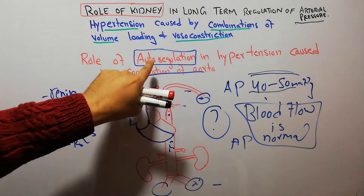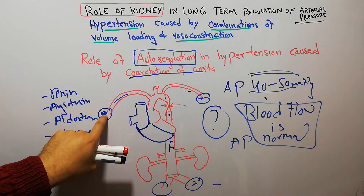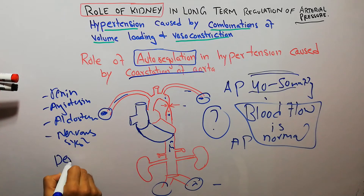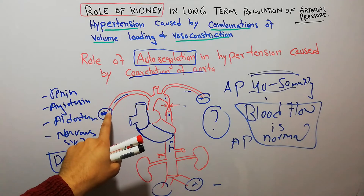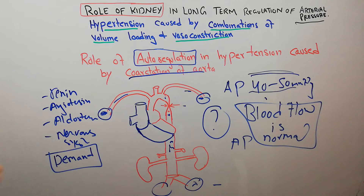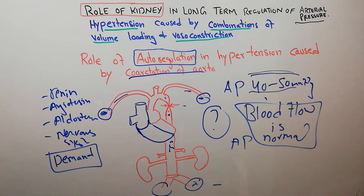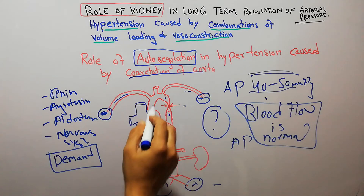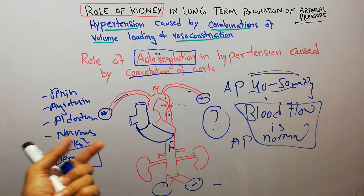The answer is basically autoregulation. Autoregulation simply means that the tissues regulate their own blood flow according to demand. If more blood is coming to these parts, the tissues themselves will decrease the blood flow so that it matches the demand. Although the arterial pressure is higher in the upper parts, due to autoregulation the blood flow is kept normal. We have discussed autoregulation in detail, including the metabolic theory and myogenic theory.